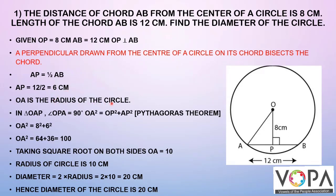OA is the radius of the circle. In triangle OAP, angle OPA is 90 degrees. Therefore, by the Pythagorean theorem, OA squared equals OP squared plus AP squared, which equals 8 squared plus 6 squared, which equals 64 plus 36, which equals 100.